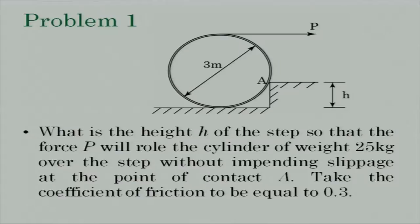What is happening here is that we have a step of size h. The coefficient of friction between all points of contact is given to be equal to μs. You are applying a force P at the top and the weight of the cylinder is 25 kg. The radius of the cylinder is given to be 3 meters, and you are asked: if the coefficient of friction is equal to 0.3, I want to lift this cylinder — which means the cylinder while lifting will lose contact with this point and completely be hinged about point A — and you are asked to find out what is the maximum value of h such that the cylinder will not slip at point A.